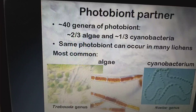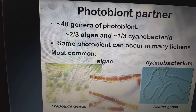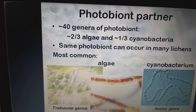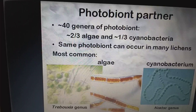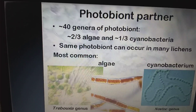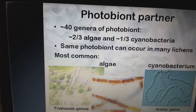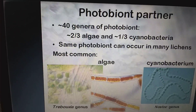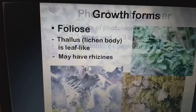Coming to the photobiont partner: there are 40 genera of photobionts — two-thirds are algae and one-third are cyanobacteria. Some photobionts can occur in many different lichens, with algae and cyanobacteria being the most common.